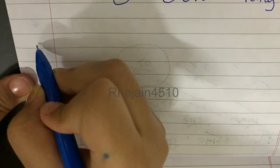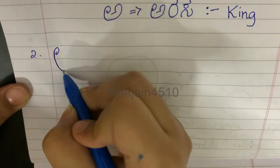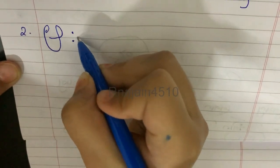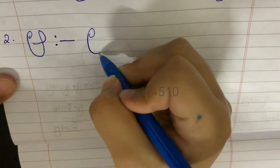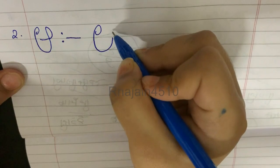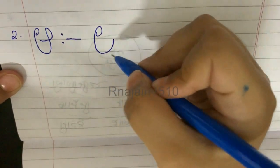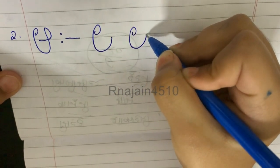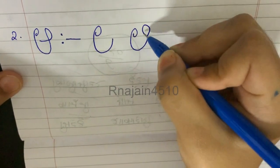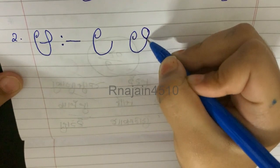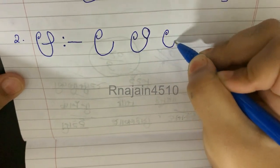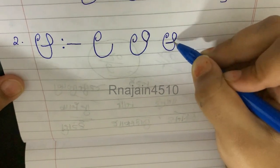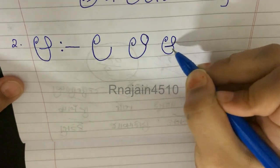The second Swaragalu in Kannada is A. The steps for A: first, make E but not full — not fully touching to the line. After that, make a curved line, pointed, towards down. Then you have to make a sleeping line wherever you had made the pointed line.